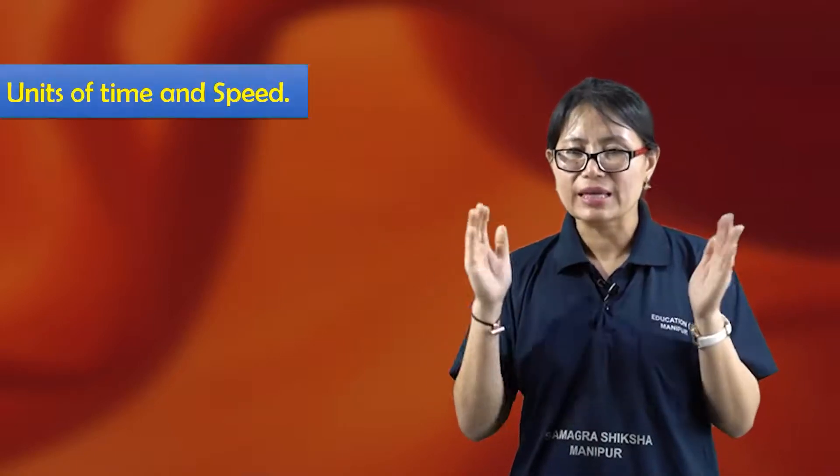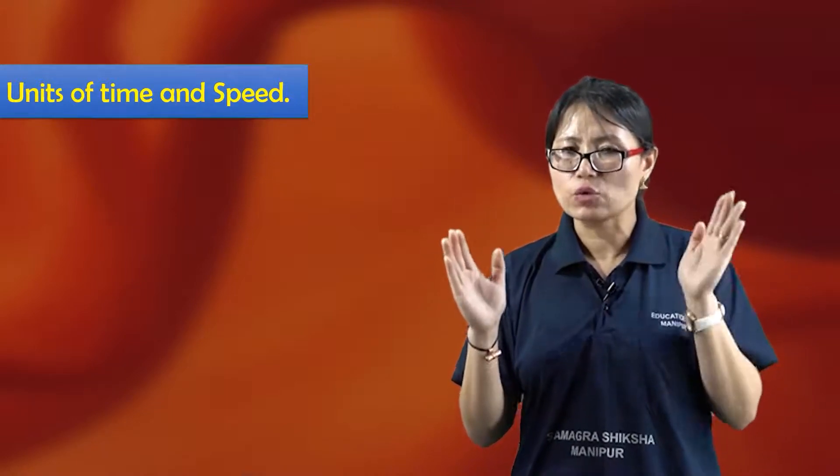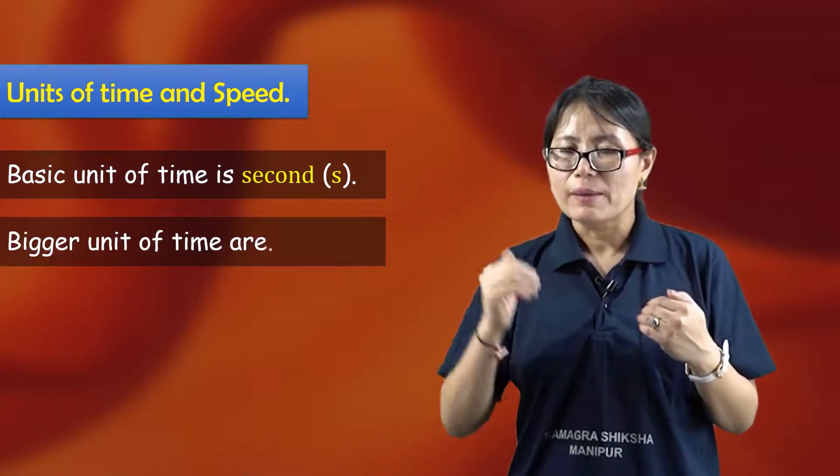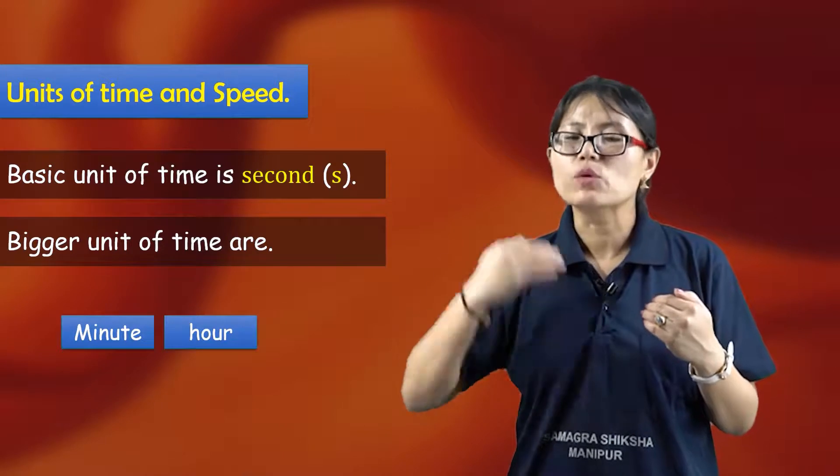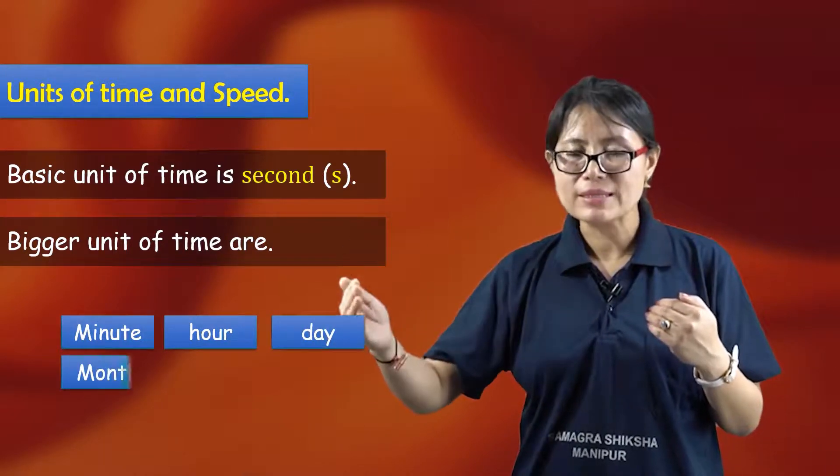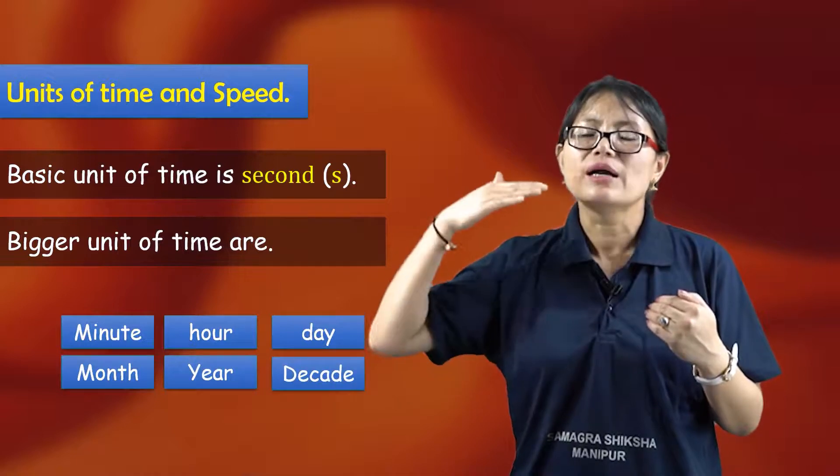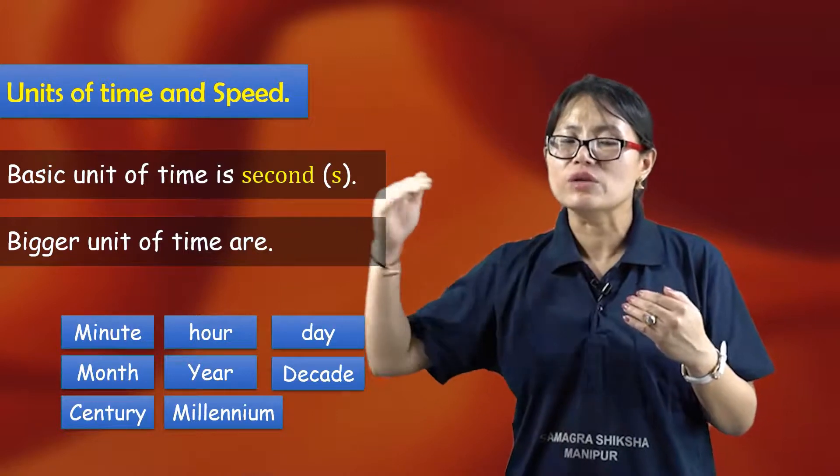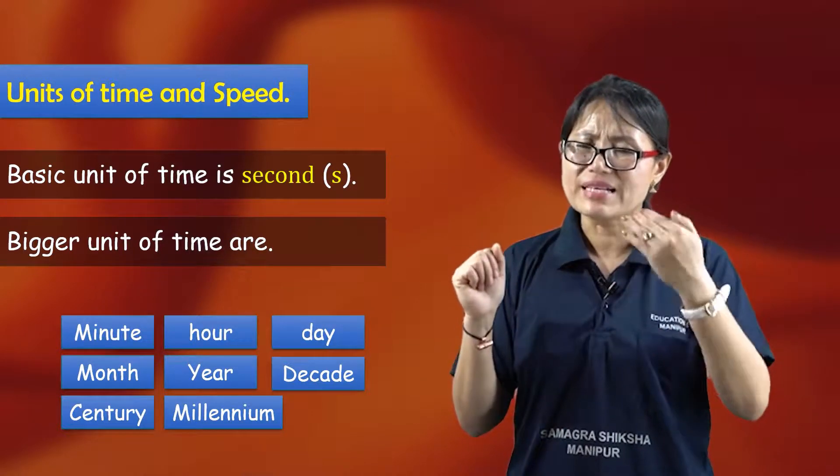Now, the unit of time and speed. The basic unit of time is the second. We have larger units like minute, hour, days, months, years, century, decade. For smaller divisions, we have millisecond, microsecond, and nanosecond.